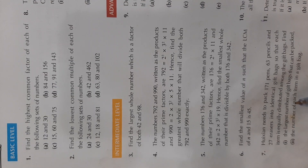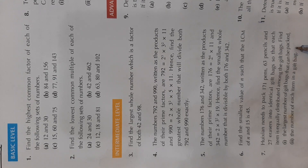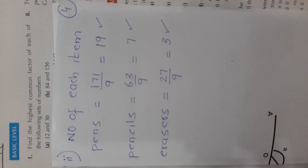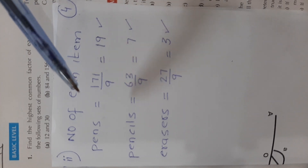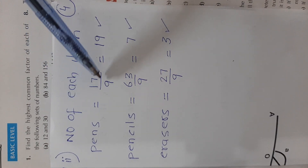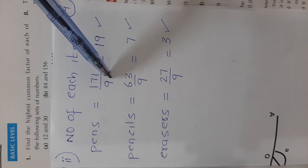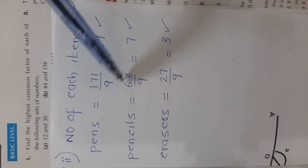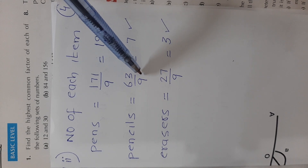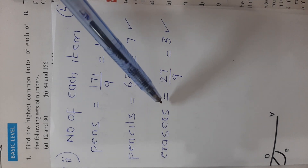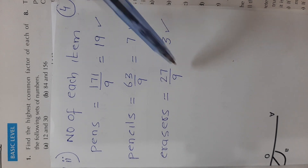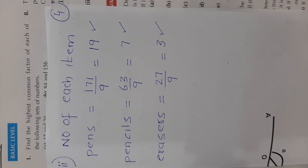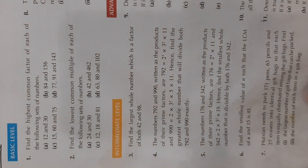The largest number of gift bags that can be packed is 9. The number of each item per bag: pens = 171 ÷ 9 = 19, pencils = 63 ÷ 9 = 7, and erasers = 27 ÷ 9 = 3.